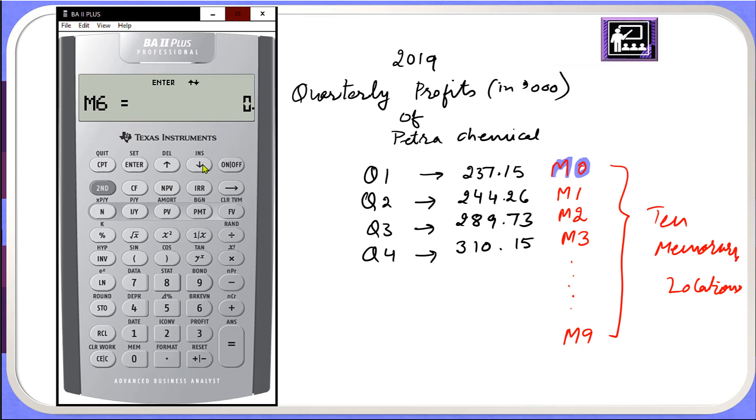And now we see that up to M9 we have memory locations, 10 memory locations although we inputted only first four memory locations.